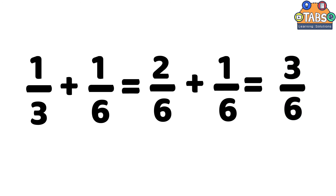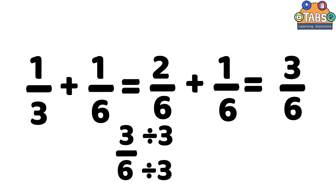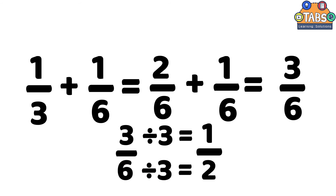Then we simplify 3 sixths by dividing both 3 and 6 by their greatest common factor, which is 3. So 3 divided by 3 is equal to 1, and 6 divided by 3 is equal to 2. So the fraction will be 1 half.